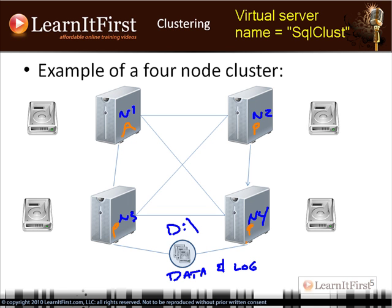The active node is the one that's actually responding to client requests. The passive nodes are sort of the standby: if the active node ever goes down, they step in. When somebody connects to SQL Clust, it's the active node they're actually connecting to. The active node has the direct connection to the SAN, so it's able to serve the data files.